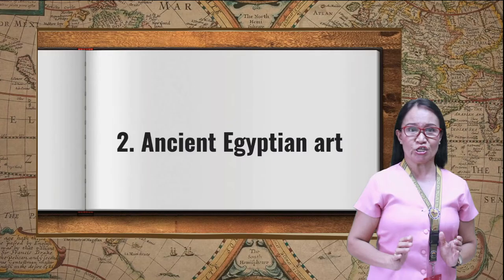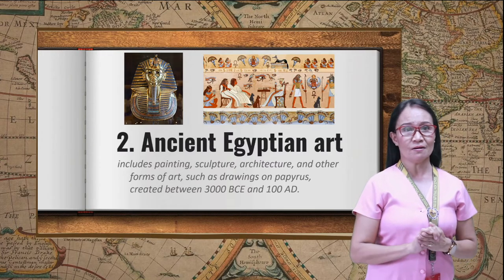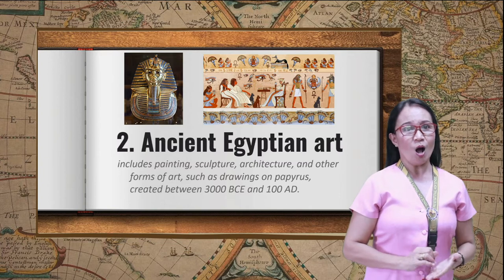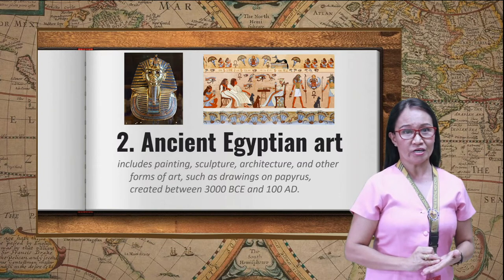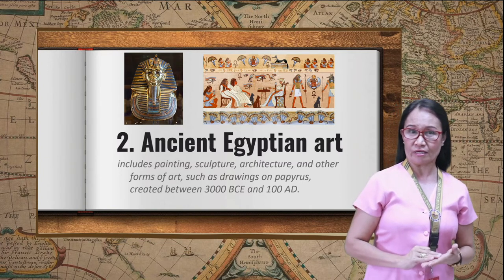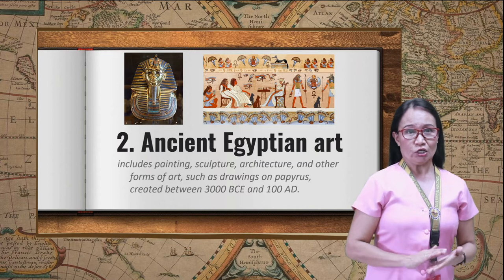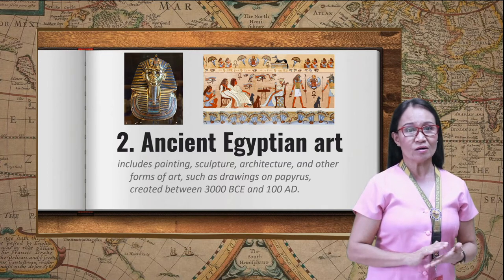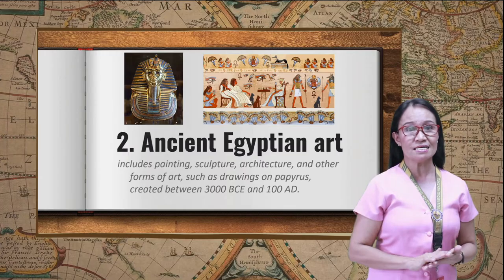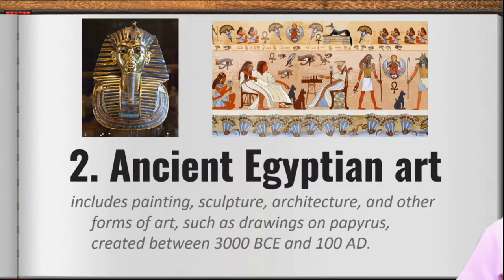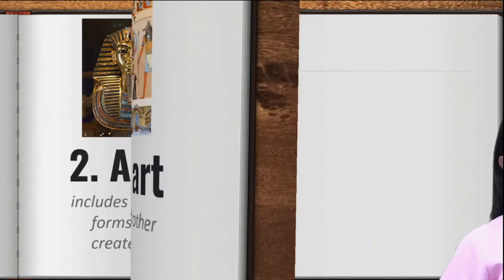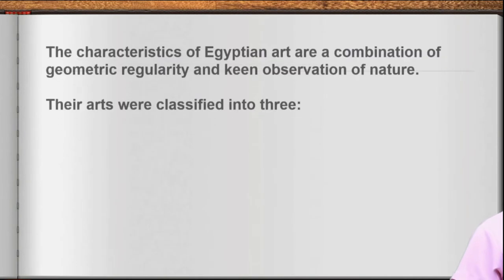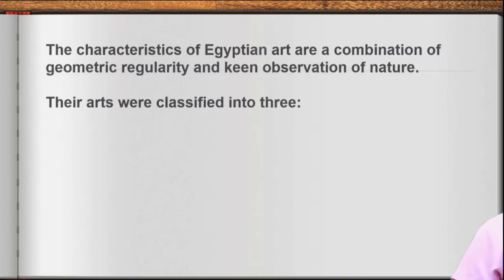Ancient Egyptian art includes painting, sculpture, architecture, and other forms such as drawings on papyrus, created between 3,000 BCE and 180 CE. The characteristics of Egyptian art are a combination of geometry, regularity, and keen observation of nature.